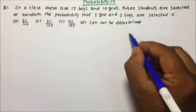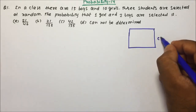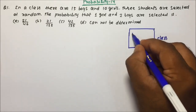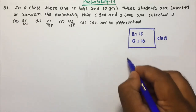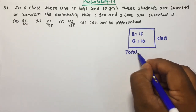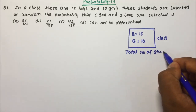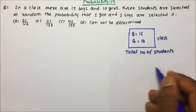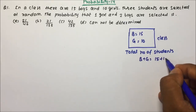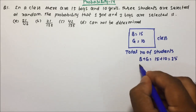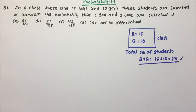In a class there are 15 boys and 10 girls. Suppose there is a class, in that the number of boys is 15 and the number of girls are 10. If we talk about the total number of students, total number of students will be equal to boys plus girls, which is nothing but 15 plus 10, which is nothing but 25. So there are total 25 students in the class.